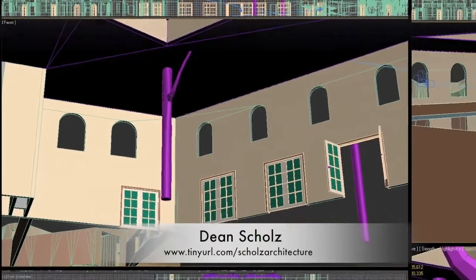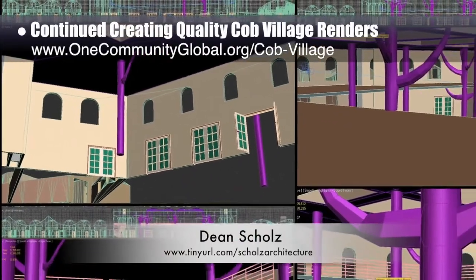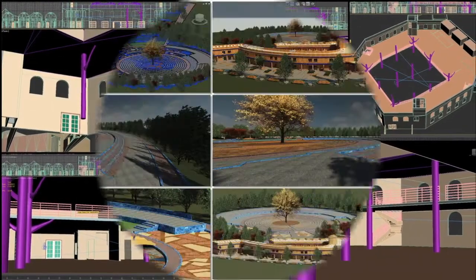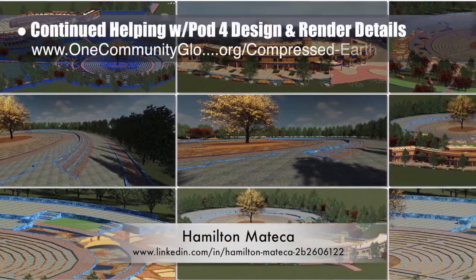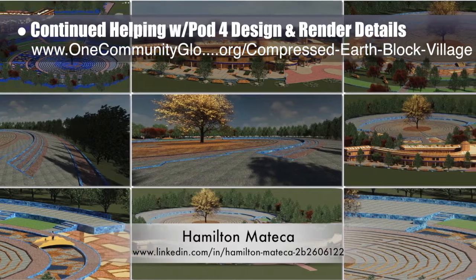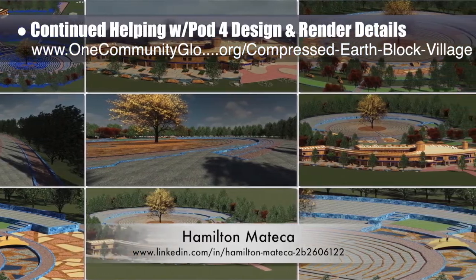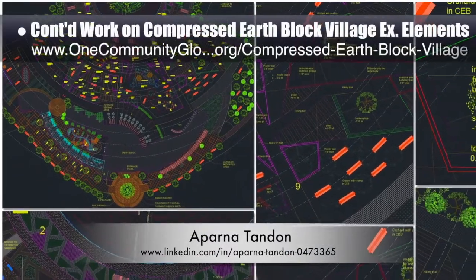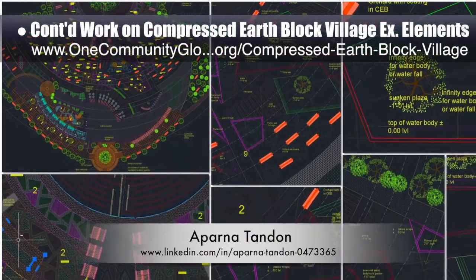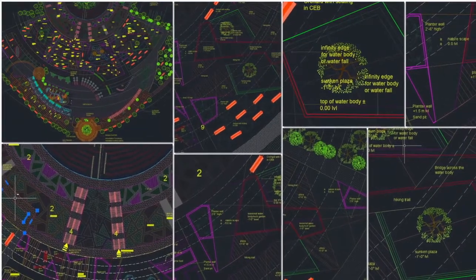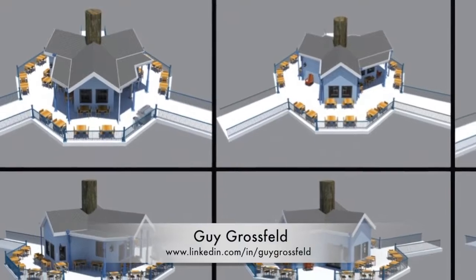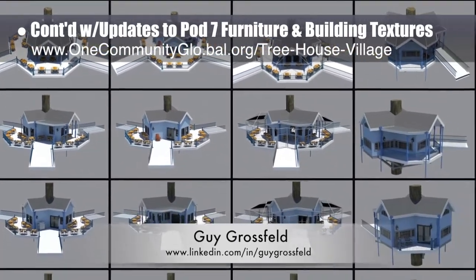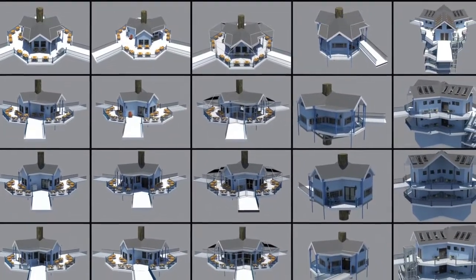Dean Schultz, architectural designer, continued helping create quality Cob Village pod 3 renders — this is Update 73 of Dean's work — focusing on the central dining and presentation space. Hamilton Matika, AutoCAD and Revit designer, finished his 45th week on the compressed earthblock village, adding blue brick details to the labyrinth area and completing new village test renders. Aparna Tandon, architect, continued her 27th week on the compressed earthblock village external elements, finishing Zone 7 and beginning Zone 8 designs. Guy Grosfeld, graphic designer, continued updates to the Treehouse Village pod 7 furniture and building textures, with 4th generation renders of the kitchen, bathroom, shower, library, playroom, and residential structures.